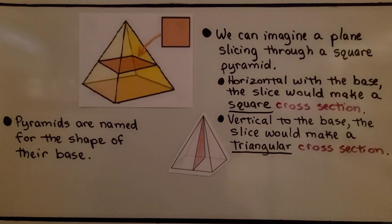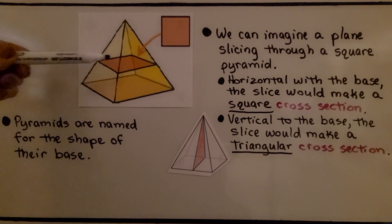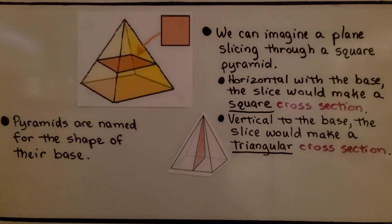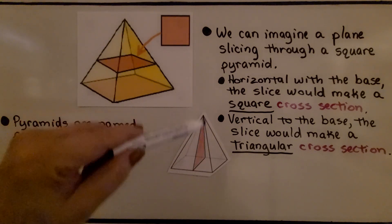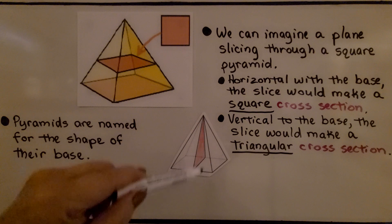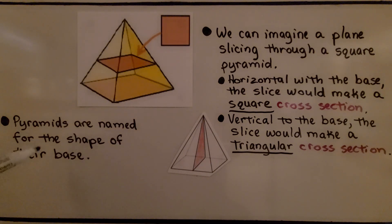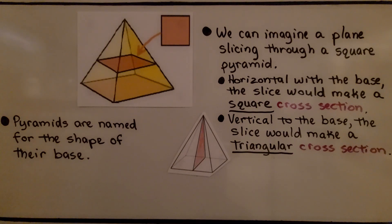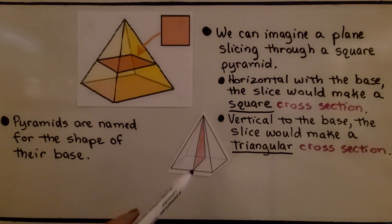We can imagine a plane slicing through a square pyramid. Horizontal with the base, the slice would make a square cross-section. Vertical to the base, the slice would make a triangular cross-section. Remember, pyramids are named for the shape of their base. So if the base is a square, it's a square pyramid. If the base is a triangle, it's a triangular pyramid. If the base is a pentagon, it's a pentagonal pyramid.